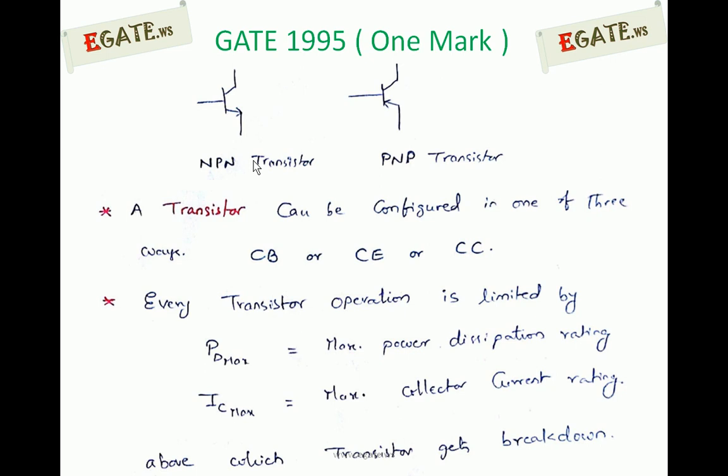A transistor can tolerate up to a maximum power dissipation of PD rated or PD maximum, above which the transistor gets breakdown. A transistor has a maximum power dissipation rating.